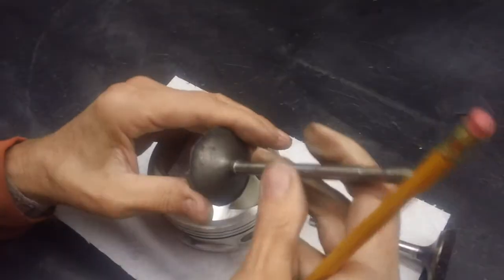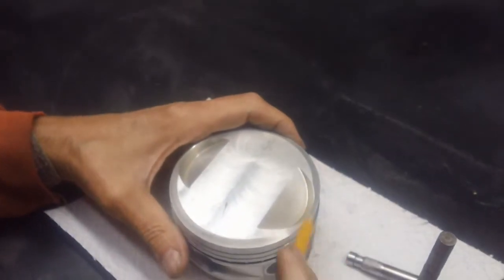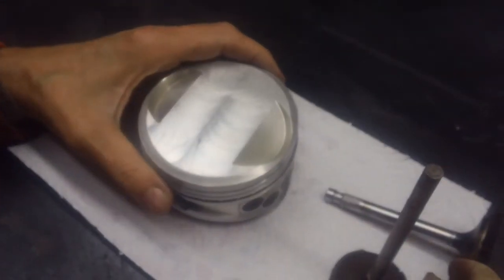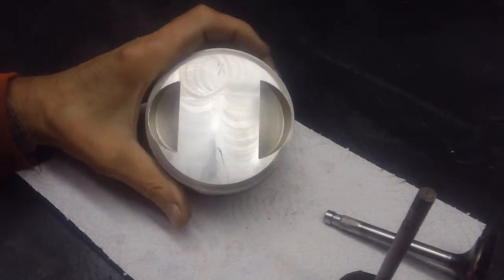After you make the cut, take everything apart, clean it up. Check your fly cut for depth. Re-clay the motor. And you can come out with something that's as nice as this.